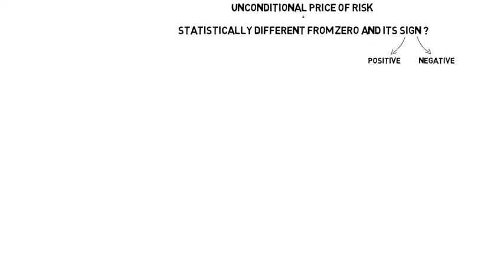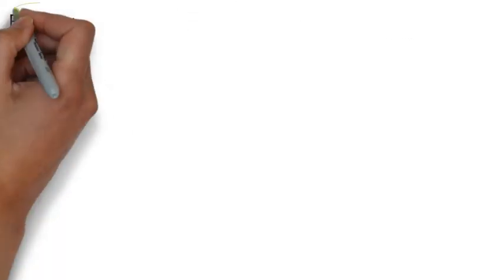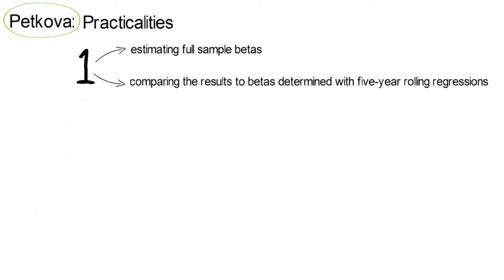Now, note the following practicalities when implementing such an approach. Petkova estimates full sample betas, but she also compares her results to betas that were determined with five-year rolling window regressions as originally done in Fama-MacBeth 1973. Petkova shows that both methods provide the same results.